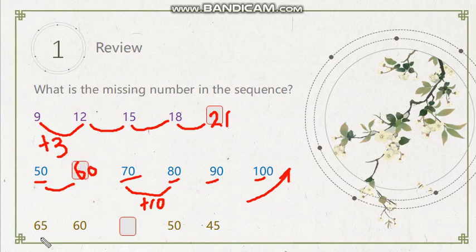And the last one: we have 65 here, and we have 60. So numbers are getting smaller. So by how much? 65, 64, 63, 62, 61, and 60. So you count it down by 5. Okay, now let's check our answer. From 50 to 45, yes, same. Okay, count it down by 5.